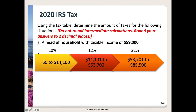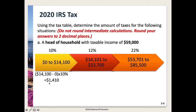In Part A, we use the tax table to determine the amount of taxes for a head of household with taxable income of $59,000. Taking the head of household column, we first apply the 10% bracket: $14,100 minus $0, multiplied by 10%, gives us $1,410. That's the tax owed for this first bracket.